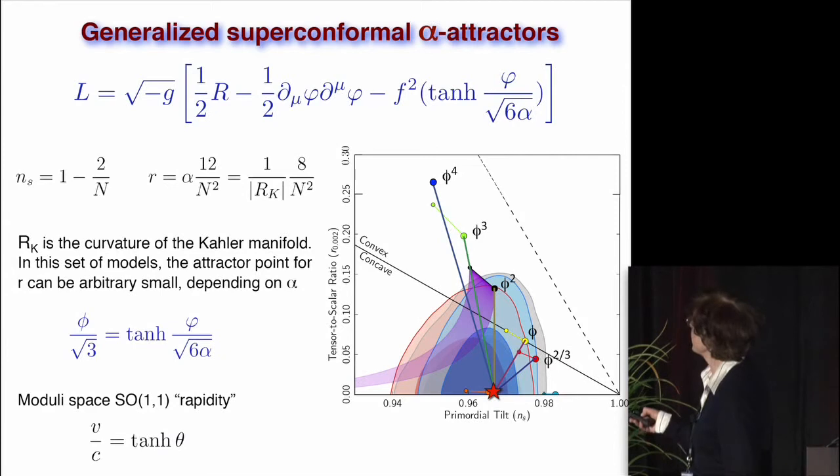So what happened here, that you can find a beautiful superconformal model where you end up with just exactly the previous model, which is a factor α here. And then again, we have this attractor picture. We could start with the function f, which is φ^4, or φ³, or φ², or φ, φ^(2/3). And then we start changing α, and they all go precisely in the place we would like to see them. But this new parameter is the curvature of the Kähler manifold. And in this particular set of models, this attractor point has a new dependence on this small parameter, which is α.